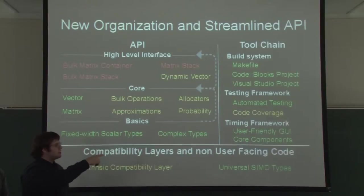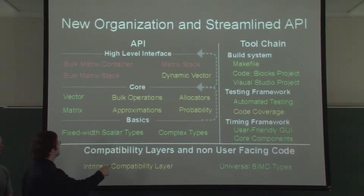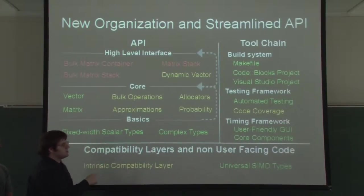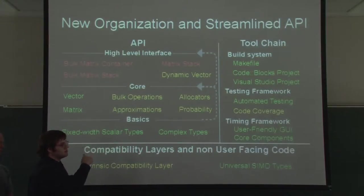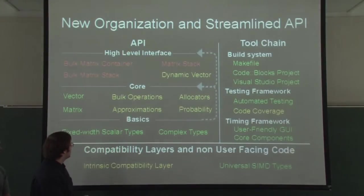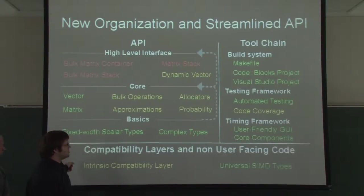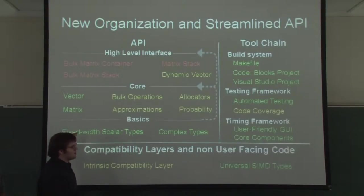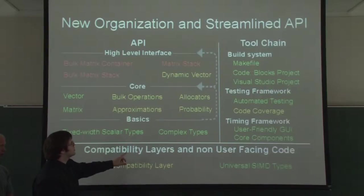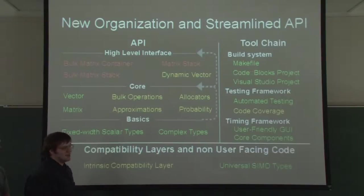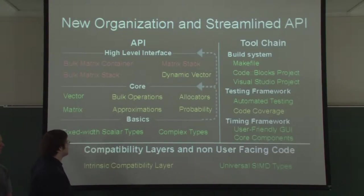The green things are things that are completely implemented. The yellow things are things that are partially implemented and we're working on them. Red things are still to come. We have three major sections of the code: the compatibility layers and non-user-facing code, which we build the API off of; the tool chain, which is critical for making sure everything works properly and that our optimizations are actually making it faster; and the user-facing API.